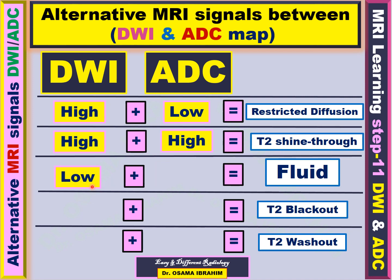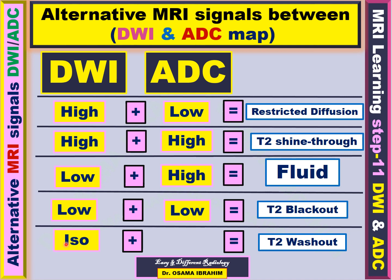If diffusion-weighted image is low and ADC is high, this is considered fluid — such as CSF in the ventricles, central necrosis, or arachnoid cyst fluid. Another possibility is both diffusion-weighted image and ADC appearing low, which is called T2 blackout. If diffusion-weighted image appears iso-intense and ADC appears high, this is T2 washout, which represents edema.